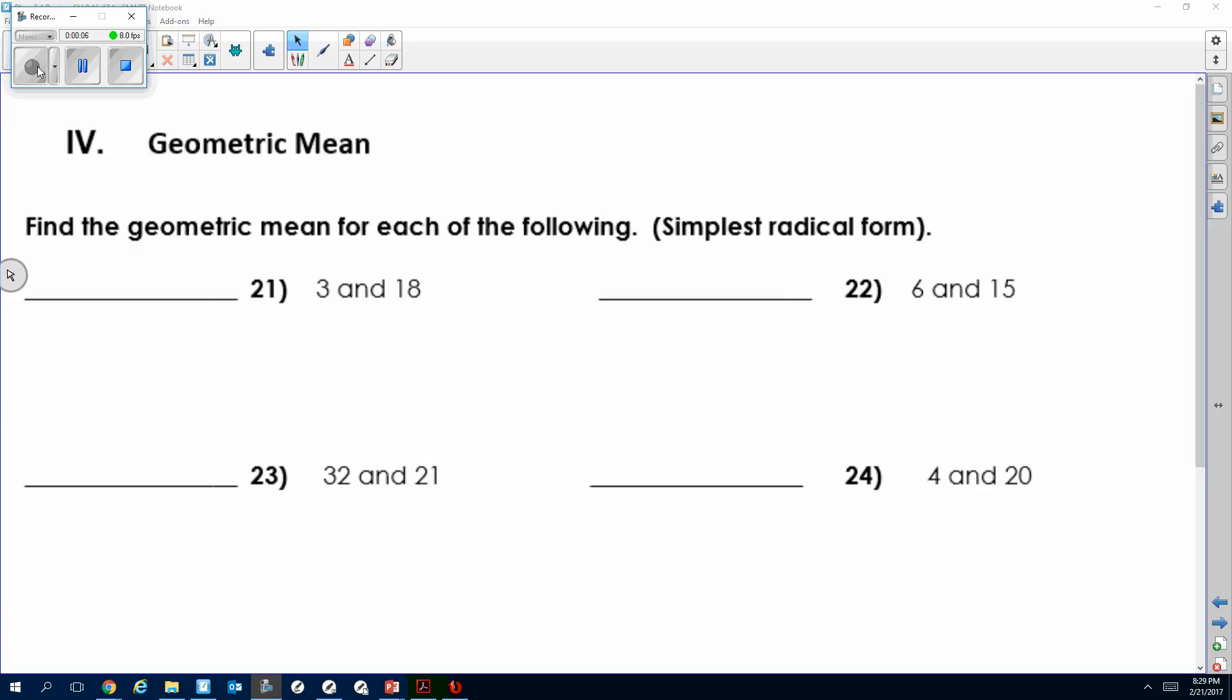Okay, you're guaranteed probably about four questions over geometric mean. You're gonna have at least two—one multiple choice, one not—dealing with the two number rule, and then with the triangle.